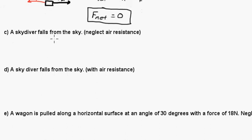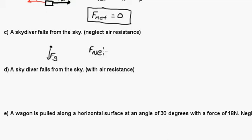Next question: a skydiver falls from the sky. If we neglect air resistance, we have the force of gravity acting on that skydiver, and there's no upward force. So it's just the force of gravity going down. Your net force here will equal just the force of gravity — if you can calculate the force of gravity, that gives you the net force.